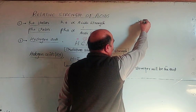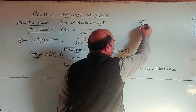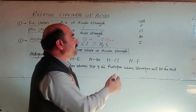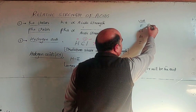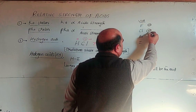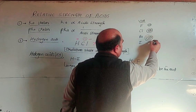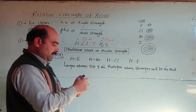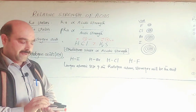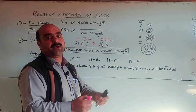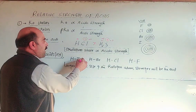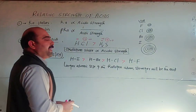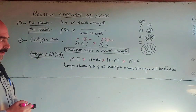Among the halogens — Group 7A elements: fluorine (period 2, 2 shells), chlorine (period 3, 3 shells), bromine (period 4, 4 shells), and iodine (period 5, 5 shells) — going down the group, size increases. Iodine has the largest size compared to the other three halogens, so hydrogen iodide (HI) is the strongest. HI is stronger than HBr, which is stronger than HCl, which is stronger than HF.